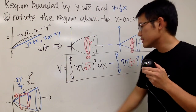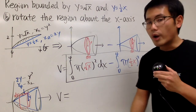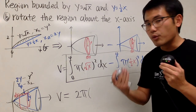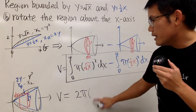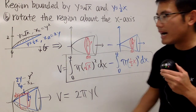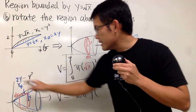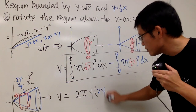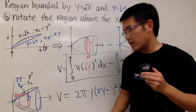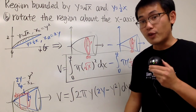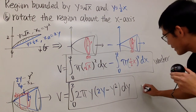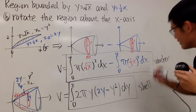Now we have all the ingredients. The volume equals 2π times the radius — that's the circumference formula — and the radius is y, so 2π y. Then multiply by the height, which is 2y minus y squared, and then dy. Integrate that from 0 to 2. So this right here is the shell method.